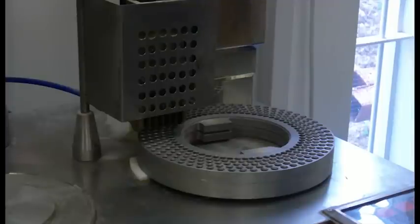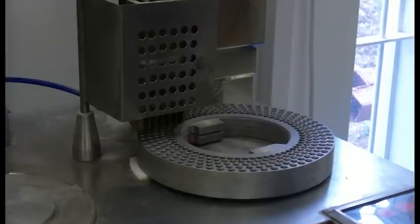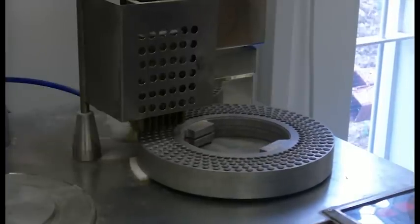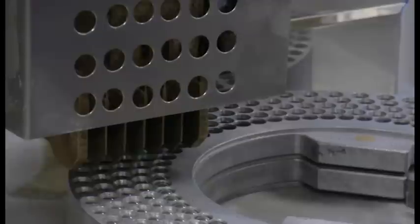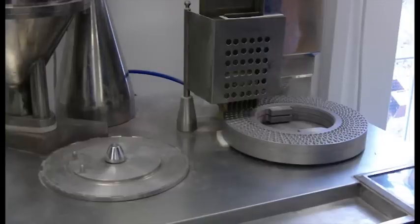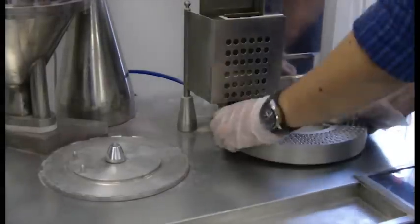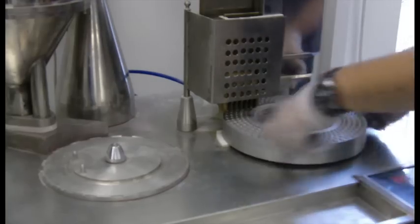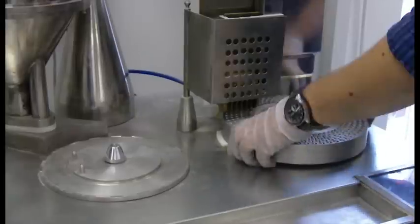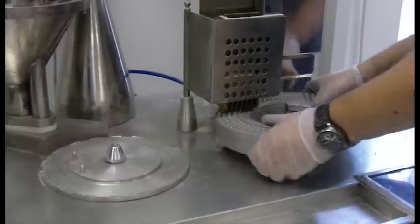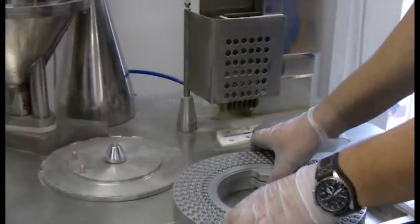The operator then uses the vacuum sucker to individually sort out and fill the capsules into the plate. Plates can be made from 000 to 5 size. The operator then uses the vacuum to separate the capsules. Once the capsules are separated, the plates are pulled apart to release just the bottom section.